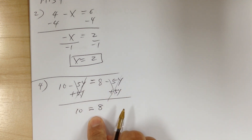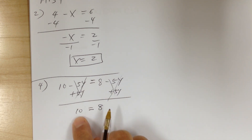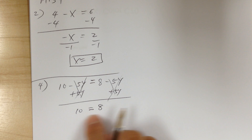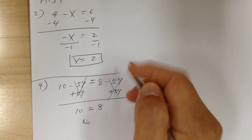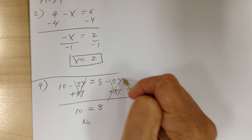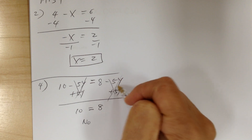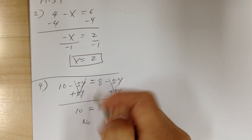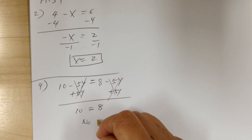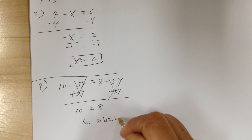Now this is impossible — it's not true. So when something is impossible and cannot be true, the answer would be no solution. Because no matter what y is equal to, it's going to always be false. And so this would be no solution.